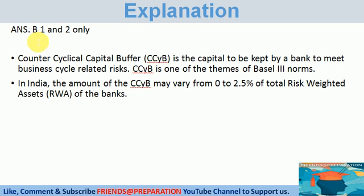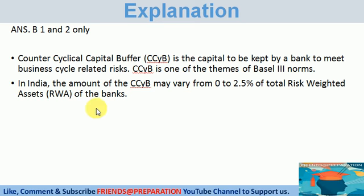The correct answer is B. 1 & 2 only. Counter-cyclic capital buffer is the capital kept by the bank to meet business cycle related risks. CCYB is one of the themes of Basel Third Norms. In India, the amount of CCYB may vary from 0 to 2.5% of total risk-weighted assets of the bank.